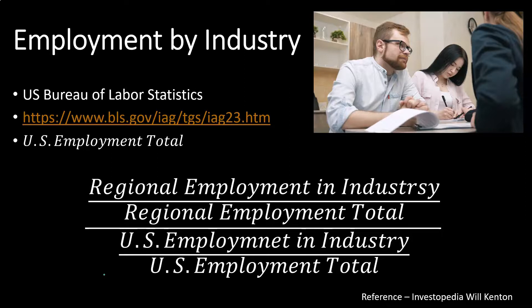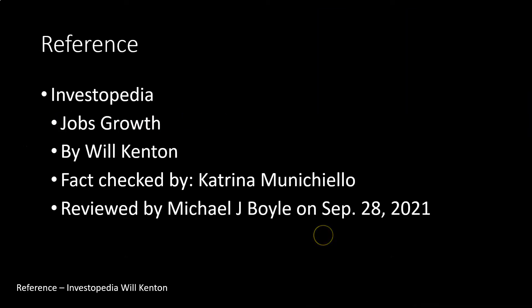If it's more diverse in terms of the area, with multiple different industries, then you might have more diversity but less likelihood for it to shoot up or go down based on the benefits of one particular industry. You have to weigh the risk versus the reward — balancing out the potential increases and the risks involved with them. Once again referencing Investopedia — a place you can go to look up investment-related terminology — jobs growth by Will Kenton, fact-checked by Katrina Municello, reviewed by Michael J. Boyle on September 28th, 2021. As time passes, you might want to take a look at Investopedia and see if they update things over time.